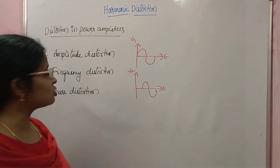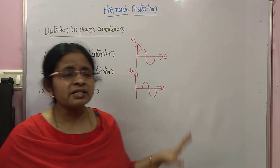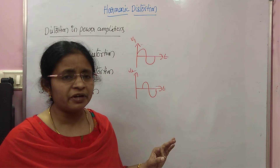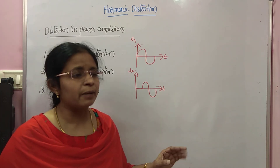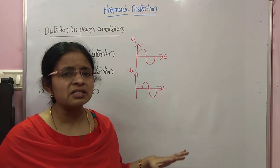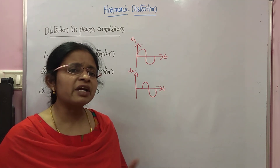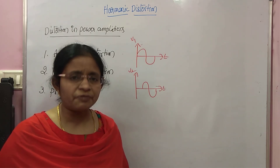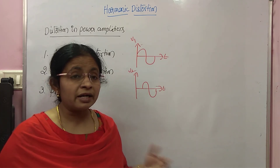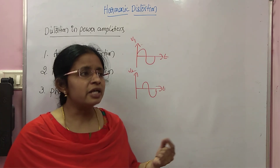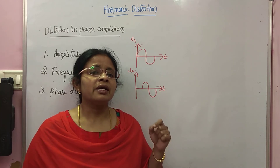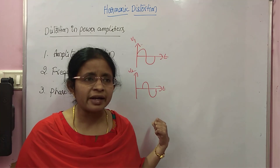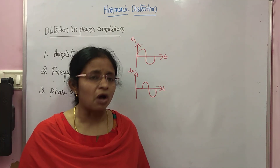Coming to frequency distortion: these are audio frequency power amplifiers, meaning the frequency is very low. As the frequency is very low, even if there exists some distortion in frequency you can neglect it. But if the frequency were very high, a small change in frequency would cause a large change in information and we couldn't neglect it. Since the frequency is small here, we can neglect frequency distortion.